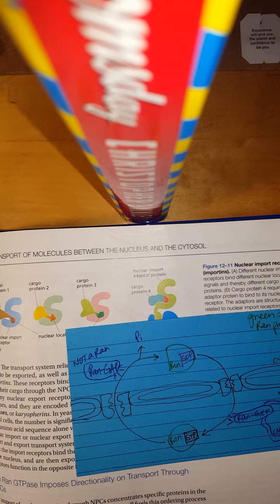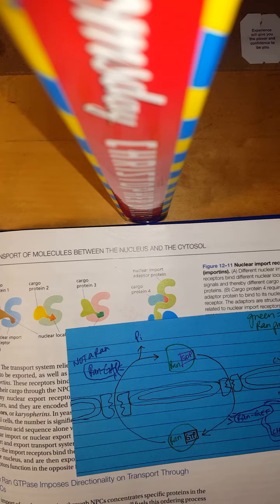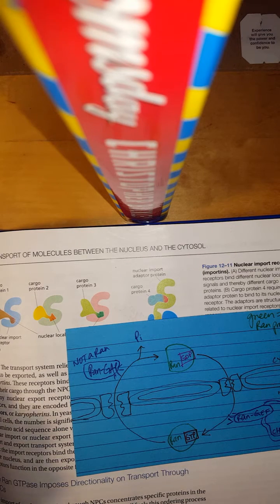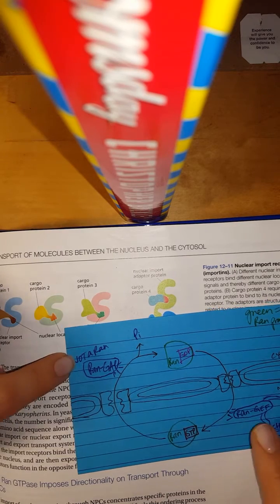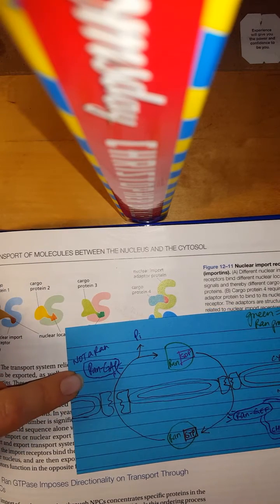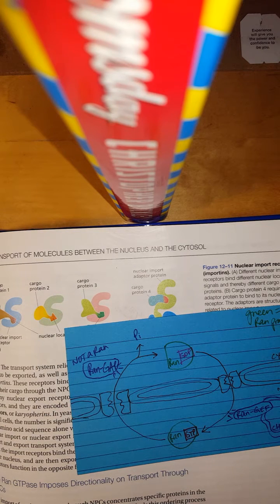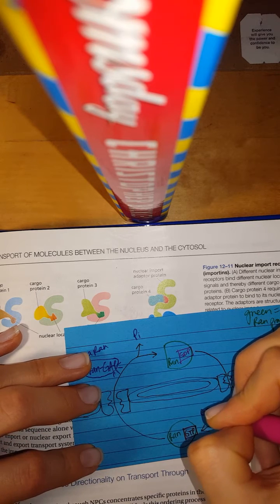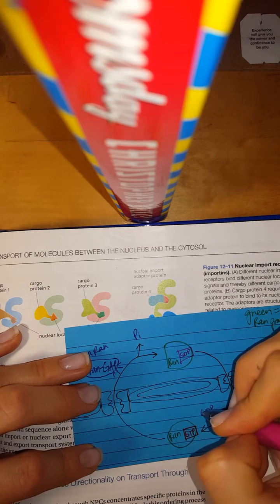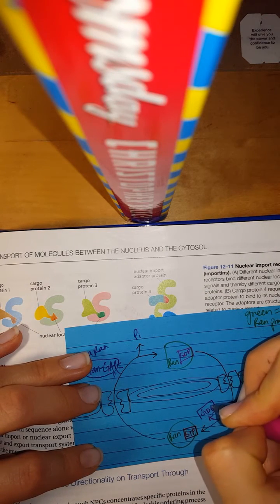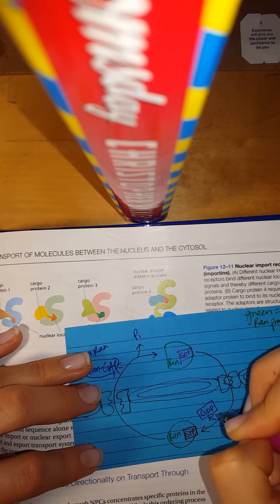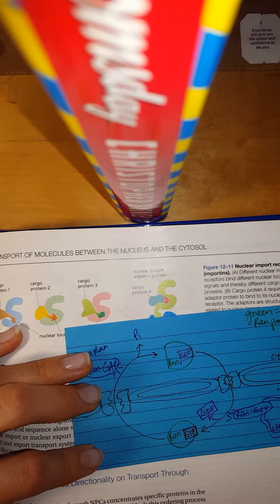It's a guanine exchange factor. So, what else do we need to talk about? Not a RAN. Not a RAN. It's a GEF. It's a GAP. What is it doing? Guanine exchange factor. So, what its job is supposed to be is to exchange GDP for GTP. Which would explain why in the diagram in my book it goes like this and says GDP. And it's in that little box.